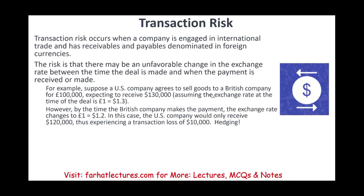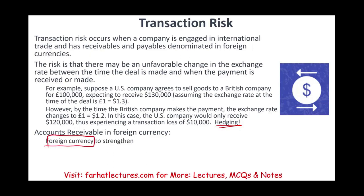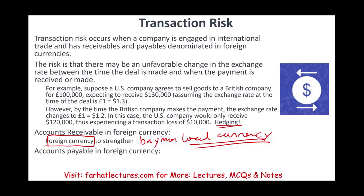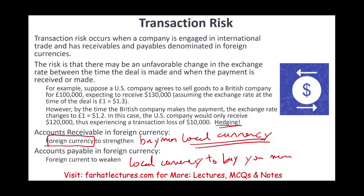This is the risk itself. We'll learn later about various hedging instruments to hedge this transaction. For now, here's what you need to know: if you have an accounts receivable in a foreign currency, you want the foreign currency to strengthen — you want your local currency to weaken — because if the foreign currency strengthens, you can buy more local currency. If you have an accounts payable in a foreign currency, you want the foreign currency to weaken, so your local currency buys you more of it.